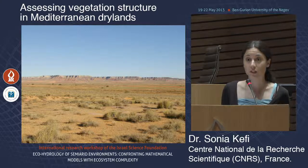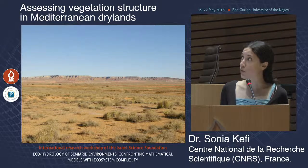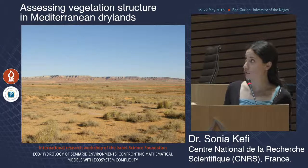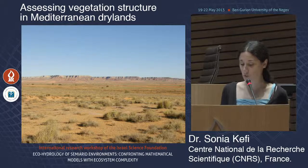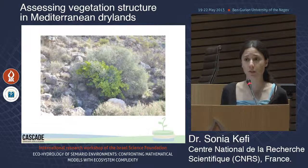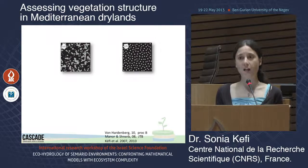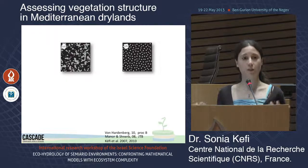One of the striking features of drylands is that the vegetation cover is patchy — vegetation is organized in patches. This is due to the fact that some species are able to improve the local environment and facilitate the recruitment of other species not as well adapted to dry conditions. Because resources, especially water, are extremely limiting, there is also very harsh competition. What theoretical studies have shown is that it is this balance between facilitation and competition — especially the spatial scales at which they operate — that drives the spatial structure we observe in the system.